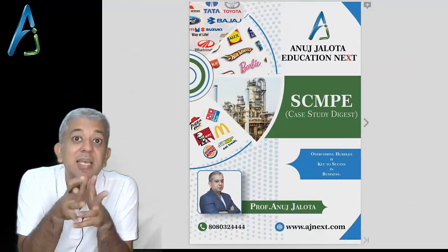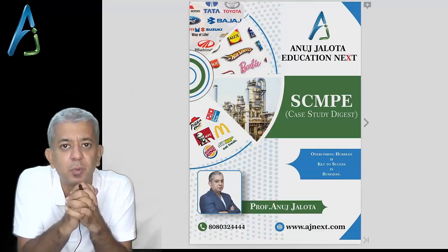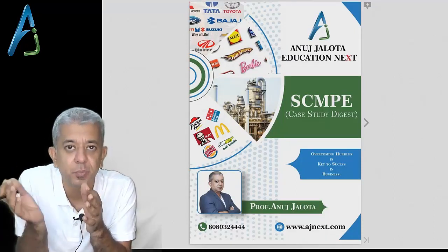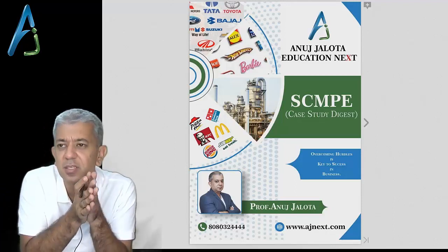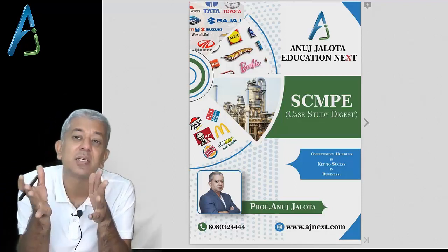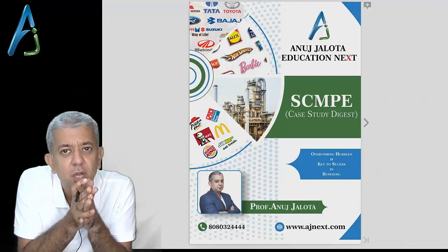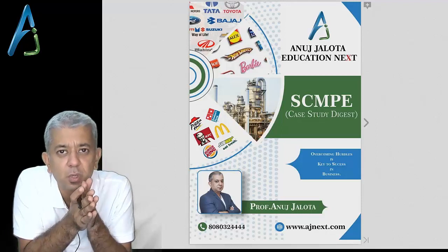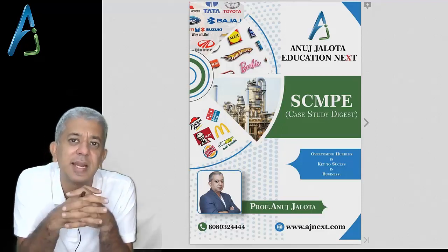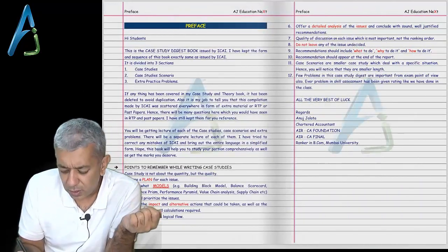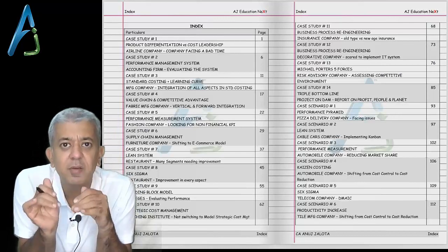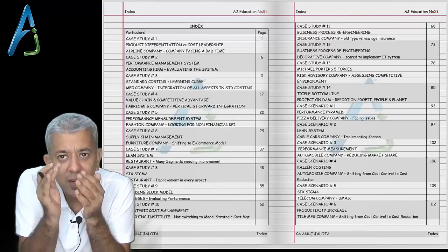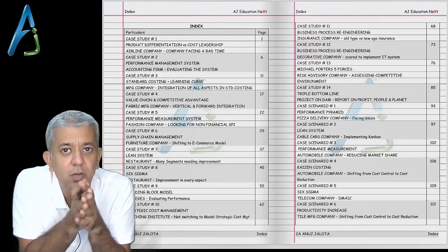The second book is called the Case Study Digest book. Around February 2021, I decided to come out with a case study digest whereby extra case studies were put and extra case scenarios were added. Case scenarios are smaller versions of case studies, usually asked for around five to six marks. Then you also have skill assessment questions, which are practical questions. The book is structured exactly as per the order of the institute, with answers slightly more enhanced. In the beginning, there is again a master index listing all questions, their concept, and which chapter they are from.